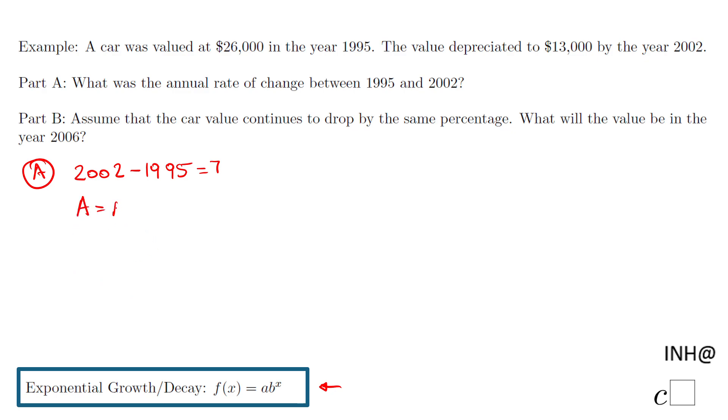We have A equals A₀ times b to the t, which t stands for years. Now what is that? A is the value in 2002 which was $13,000. A₀ is the initial value of the car, $26,000. And then we have this b we need to find out, and t is seven.